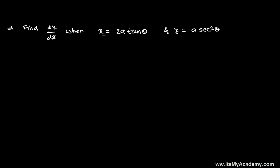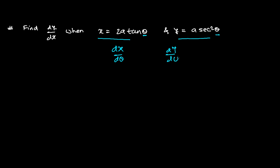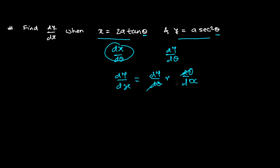Let's find dy/dx when x equals 2a·tan(θ) and y equals a·sec²(θ). As explained in the previous video, for this type of question we use the chain rule. We differentiate both with respect to θ to get dx/dθ and dy/dθ, then apply the chain rule: dy/dθ multiplied by the reciprocal dθ/dx, so that dθ cancels and we get dy/dx.